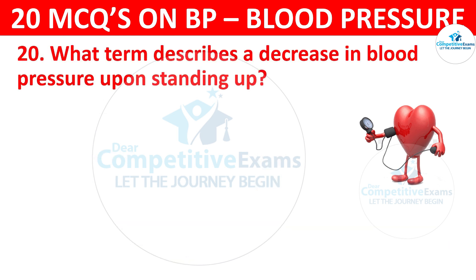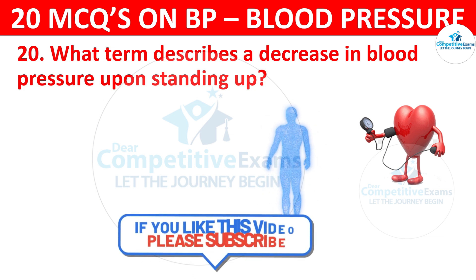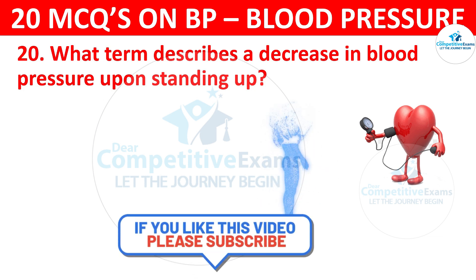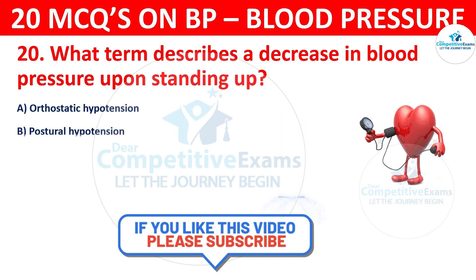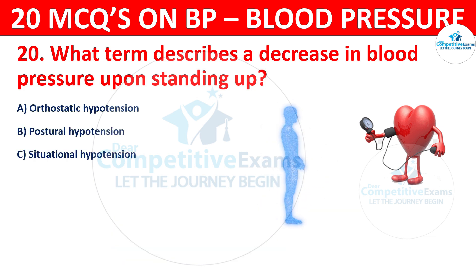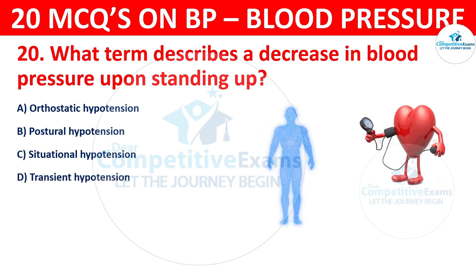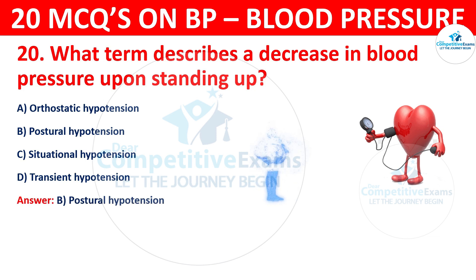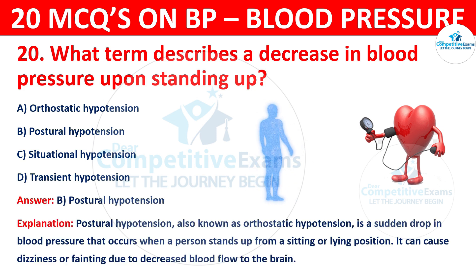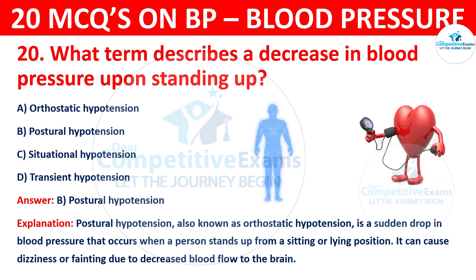Question 20. What term describes a decrease in blood pressure upon standing up? Your options are: Orthostatic hypotension or Postural hypotension? The correct answer is B, Postural hypotension, also known as orthostatic hypotension. It is a sudden drop in blood pressure that occurs when a person stands up from a sitting or lying position, and can cause dizziness or fainting due to decreased blood flow to the brain.